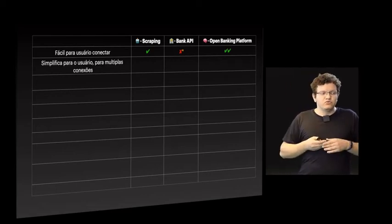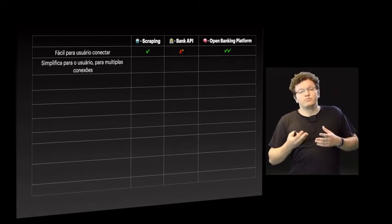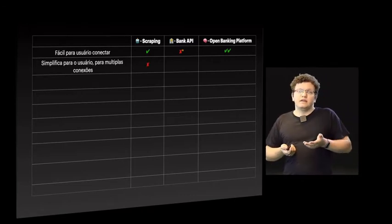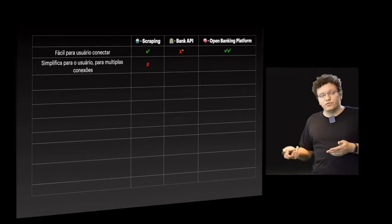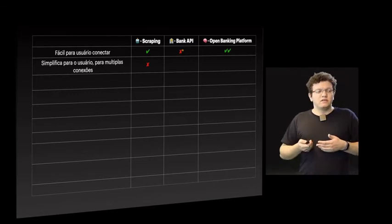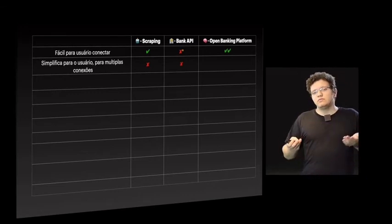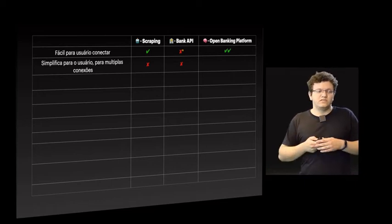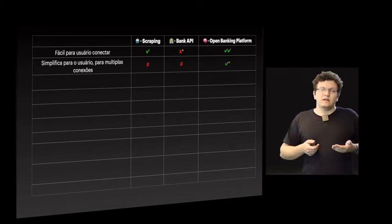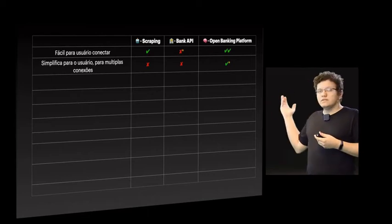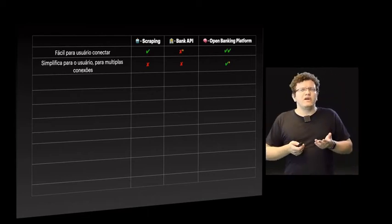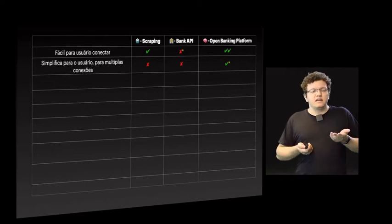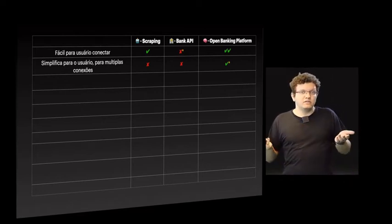É simples para o usuário ter múltiplas conexões? No scraping, não — ele vai ter que fazer a conexão toda vez. Na API de banco, mesma coisa, vai ter que fazer todas as vezes. E na plataforma, com asterisco — depende de como a plataforma implementa isso —, mas sim, é bem legal reaproveitar as conexões.